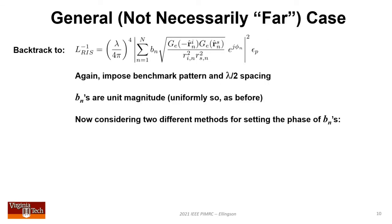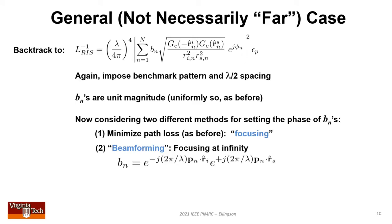This brings us to how path loss varies with surface size, no longer constrained to far case assumptions. We backtrack to this earlier expression, continuing to assume benchmark element pattern and half wavelength spacing. We constrain b sub n's to have unit magnitude but consider a second method for setting phase. The first method, focusing, always minimizes path loss. The second, beamforming, has the RIS focus at infinity.